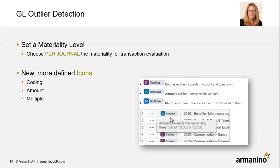In the general ledger, the GL outlier detection continues to improve. You can now set a materiality level per journal for transaction evaluation, which is new. You also have more defined icons — when you get your results, you can see a coding amount or multiple outlier codes, giving you more insight into what the issues are.